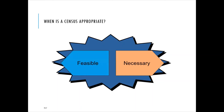Another reason for sampling is that it's not always possible to conduct a census. A census is when you measure the entire population — surveying all 1,000 employees. Sampling is when you survey only 100 and estimate the entire population based on those results.